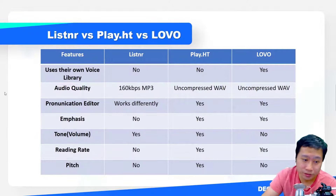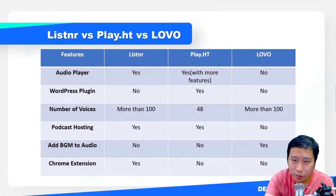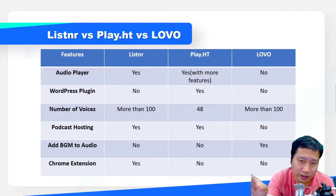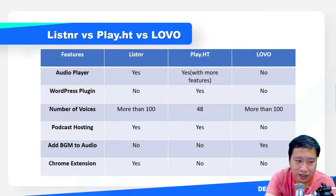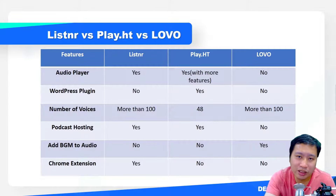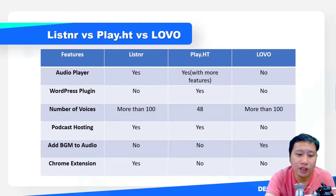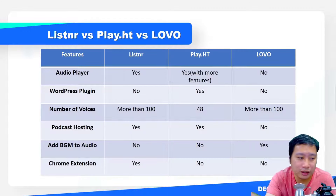Listner and PlayHT both have their own audio player that you can embed into a website. PlayHT's player is a lot more customizable, with additional features I'll show later. Lovo does not have an embedded audio player.